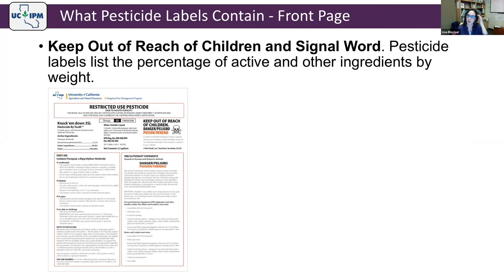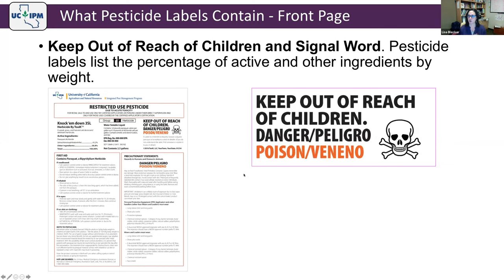Also required on the front page is a 'keep out of reach of children' statement and a signal word. The signal word 'danger poison' must be in English and Spanish and accompanied by a skull and crossbones. Even with a different signal word, it must appear with the keep out of reach statement on the front page.